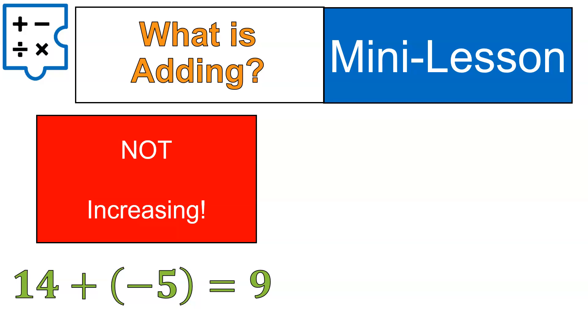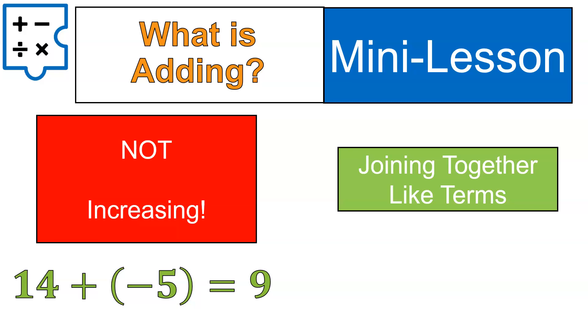14 plus negative 5 is equal to 9. This is decreasing 14 to 9, but we did it by adding, right? So I would rather think of adding as joining together like terms. And that's a way for us to think about it, and it's a little bit more accurate when we move forward into adding positive and negative numbers.